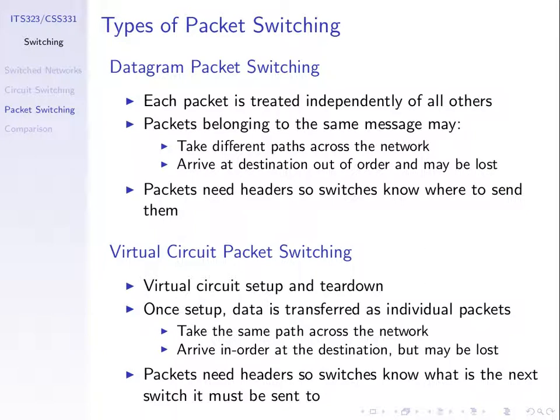Datagram packet switching is the simplest. The source splits data into packets and sends them, and those packets are treated independently by switches in the network. Even if packets 1, 2 and 3 are from the same source, the switch may take different decisions on how to treat them. Packets normally have headers — data plus header overhead — to tell the switch where to send them and who the destination is.